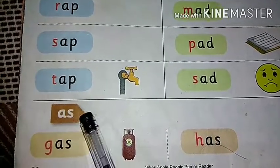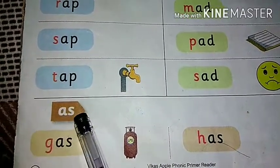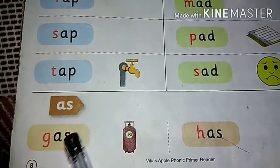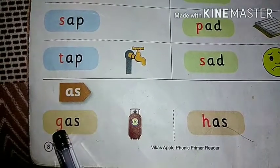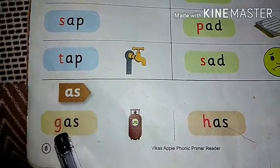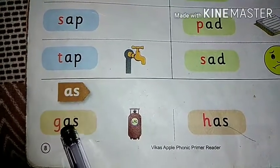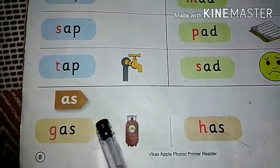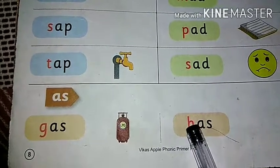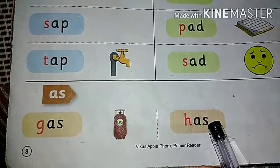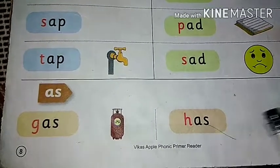Here -as words are given. A-S — as. The phonic sound of G is 'g'. G-as — gas. H-as — has.